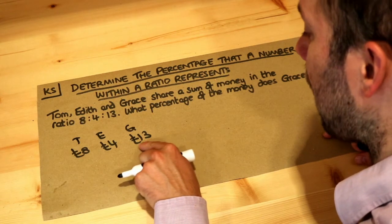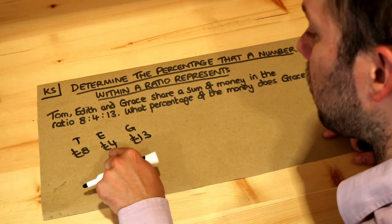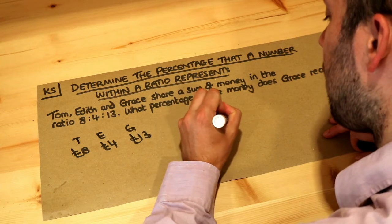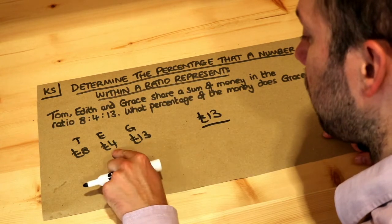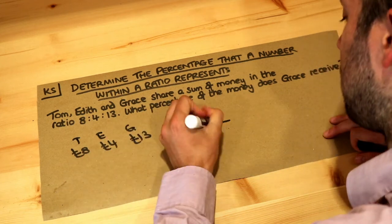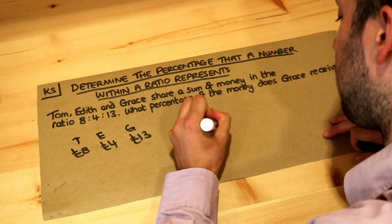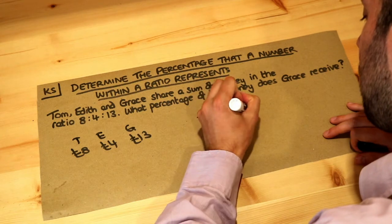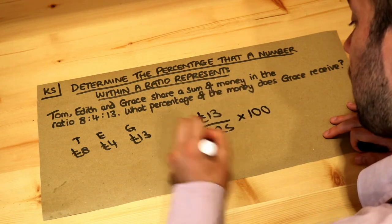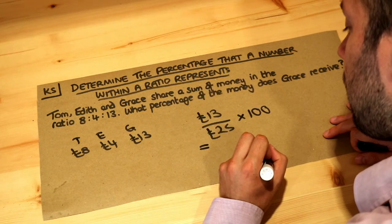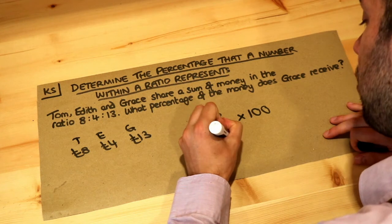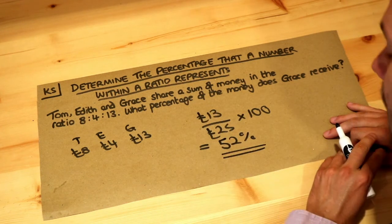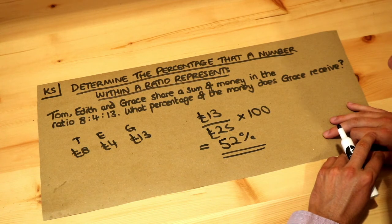She got 13 pounds out of the total amount. Adding 8, 4 and 13 together gives 25 pounds, so we do 13 over 25, and to convert a fraction to a percentage we multiply by 100. That gives us 52 percent, so Grace received 52 percent of the money.